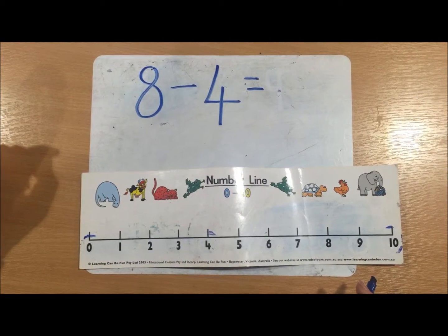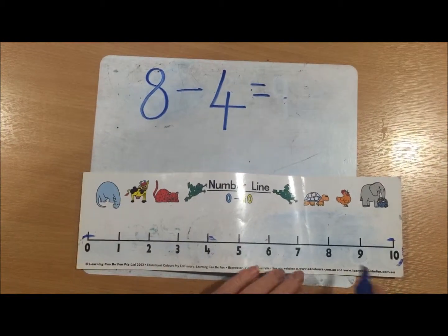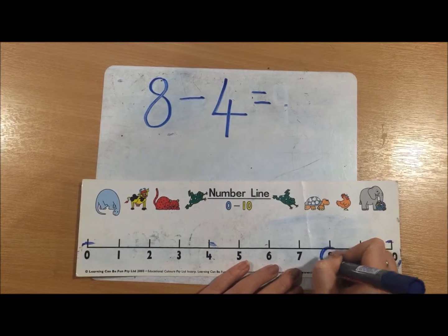The second thing we need to do is circle the biggest number, and the biggest number is 8. So I'm going to put a circle around 8.